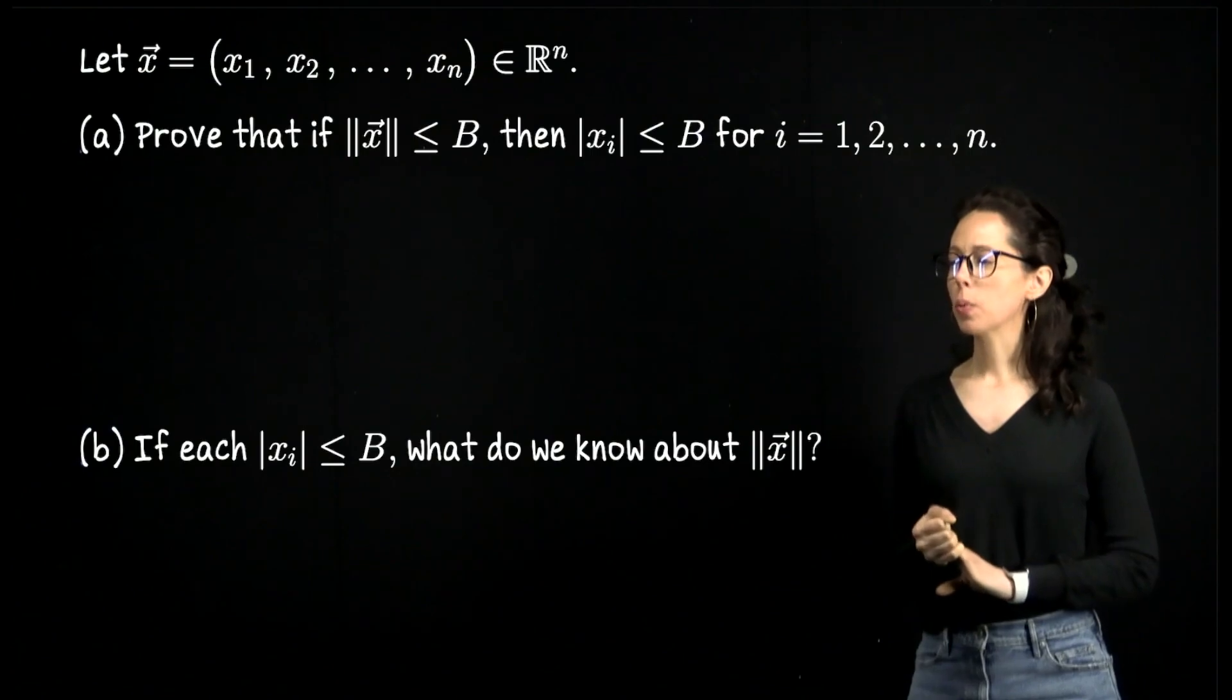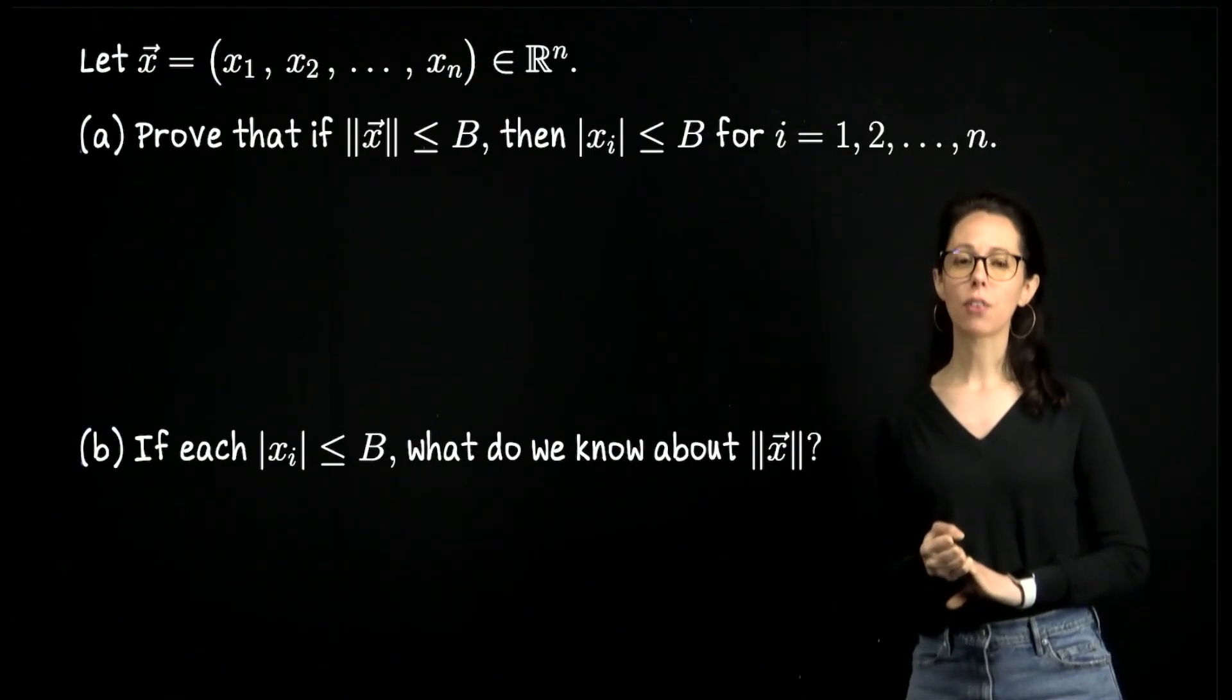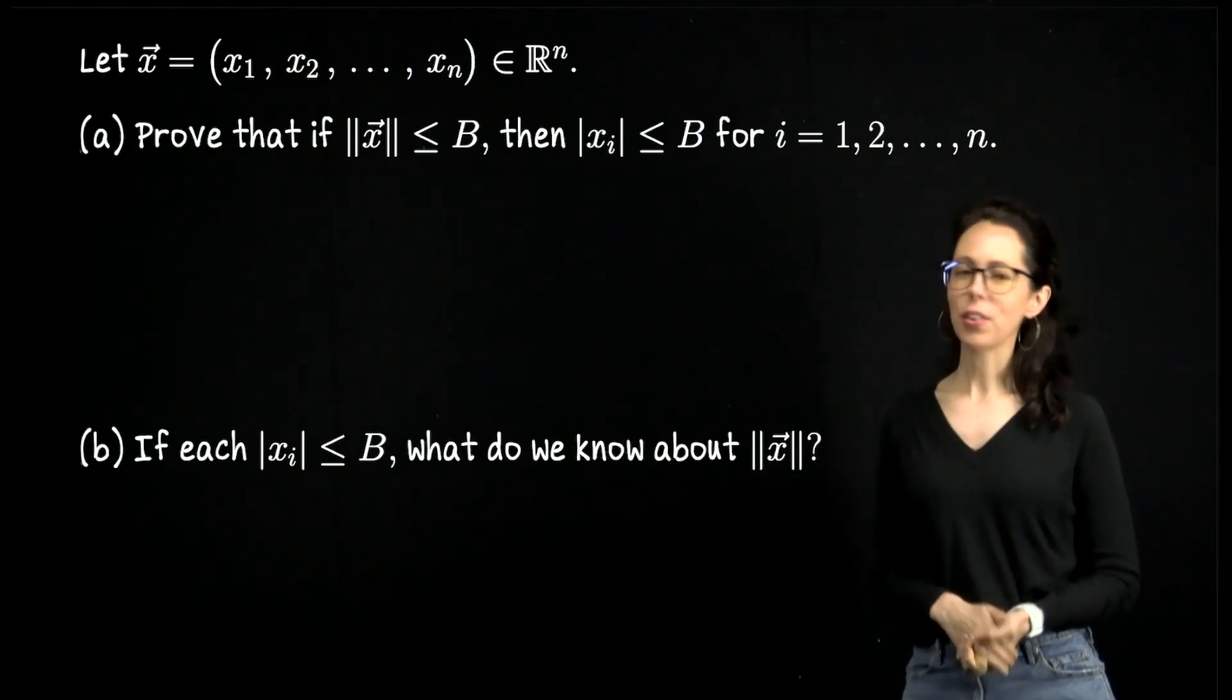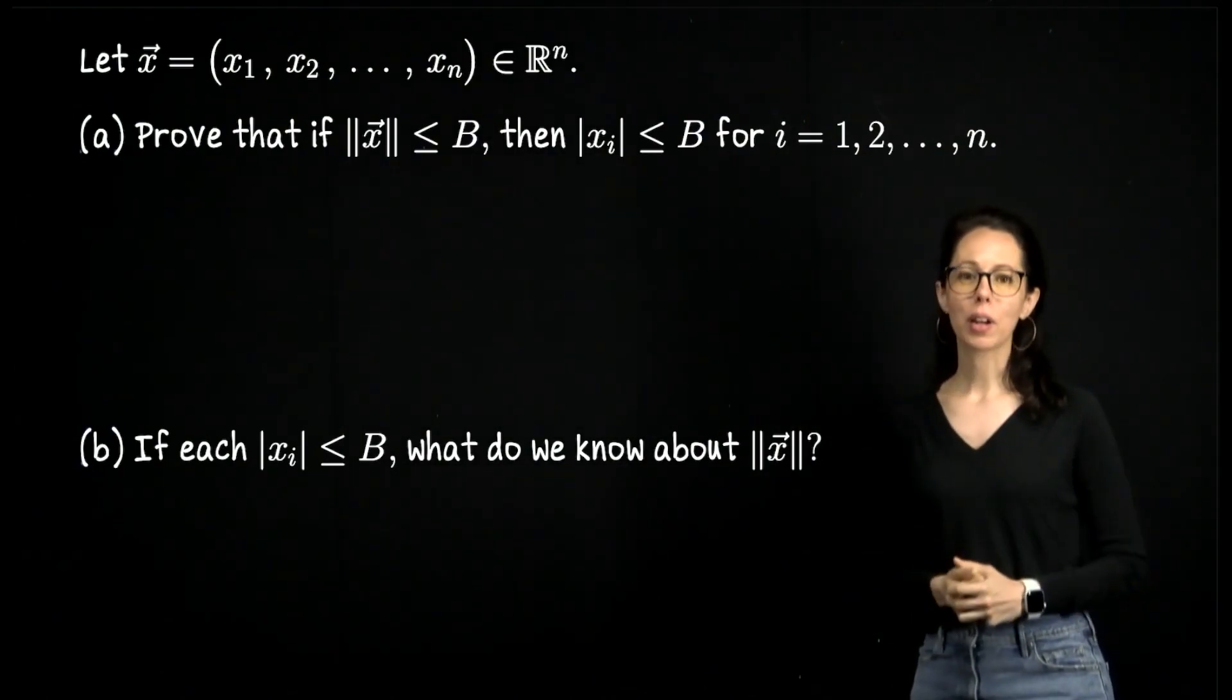For the second one, this one is asking for us to give the best bound on the vector x if we know that each of the coordinates is bounded by some number B. All right, if you feel ready to go, you can pause and see if you can work out the first one and the second one. I'll start with a.